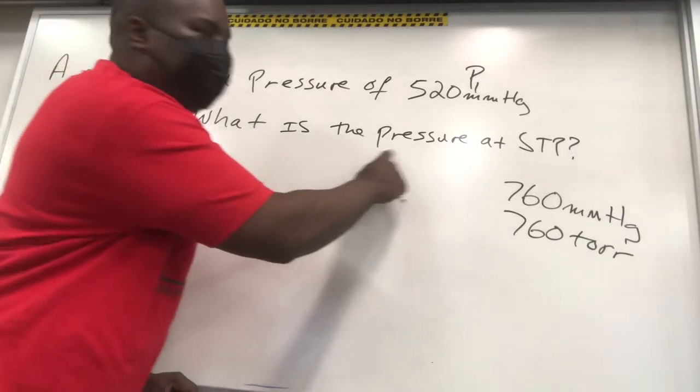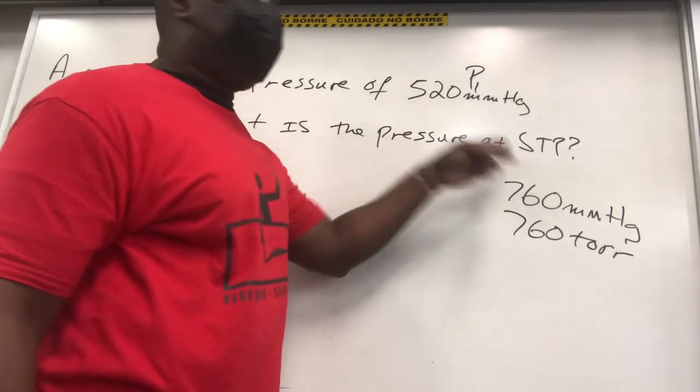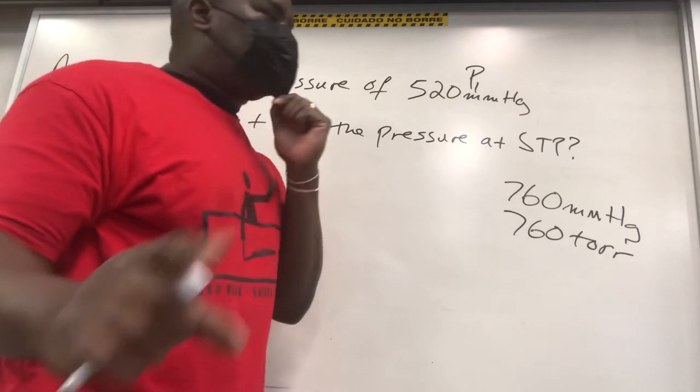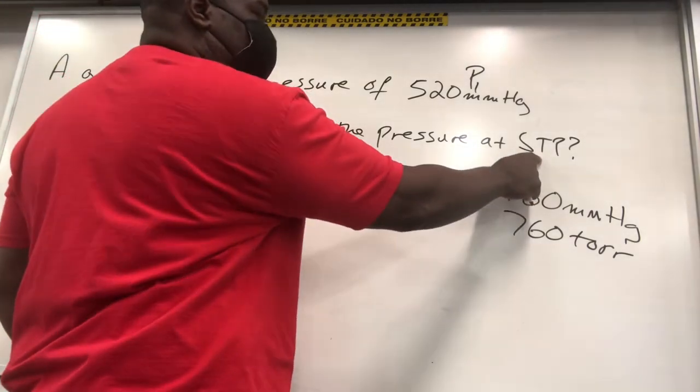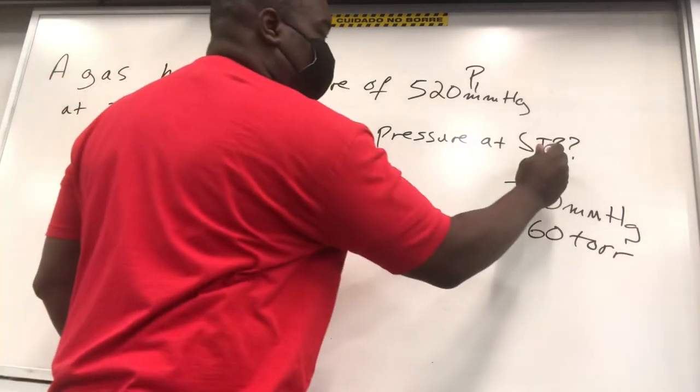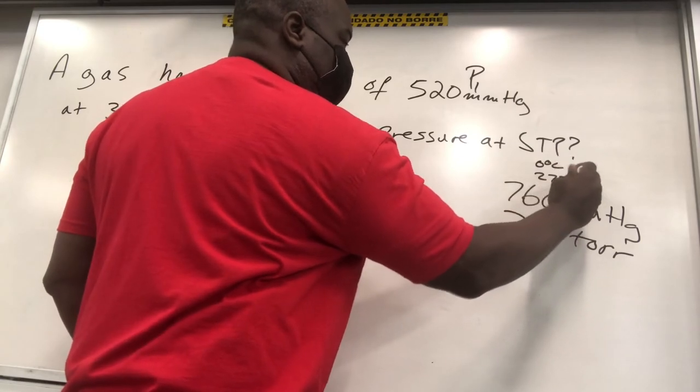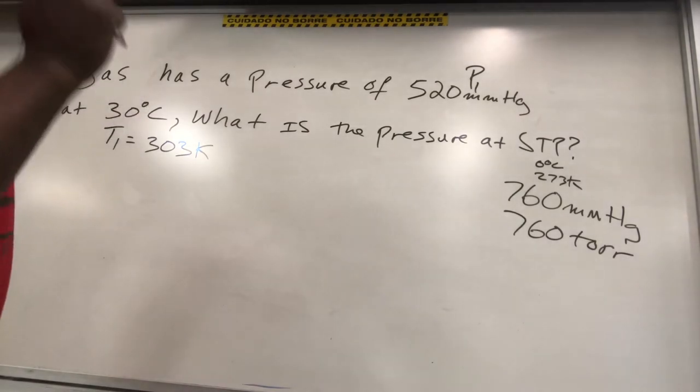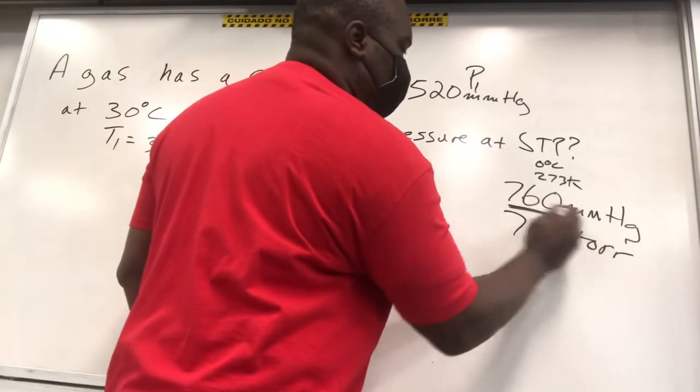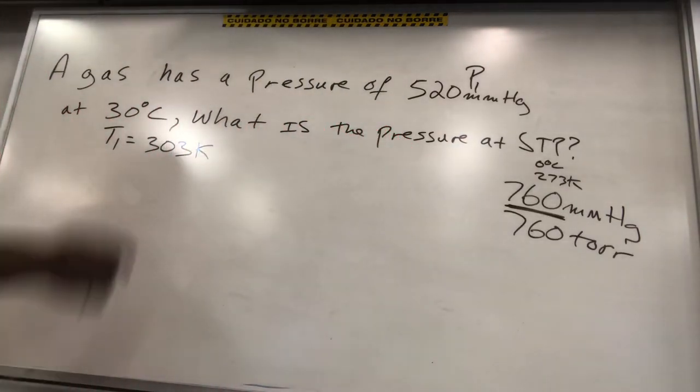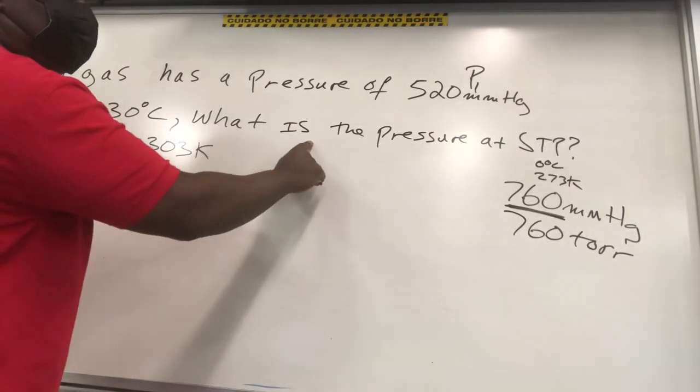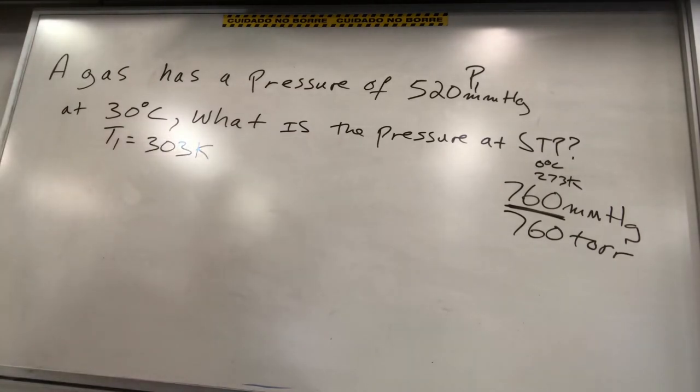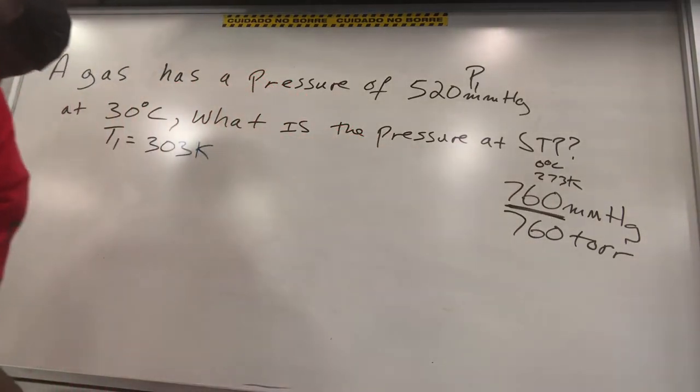Now, what is the pressure at STP? Be very careful, folks. Any time they tell you STP and do a gas law calculation, sometimes students don't see or realize there are numbers involved here. So what's happening? Standard temperature is 0 degrees C or 273 Kelvin. And standard pressure, as we said before, is 760. So we're looking at the problem right here. A gas has a pressure of 520, that's our P1, and this is our T1. What's the pressure at STP? Our temperature is going to be 273 now. That's going to be our new temperature.